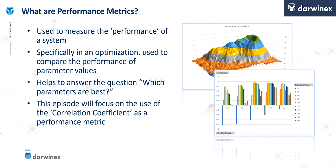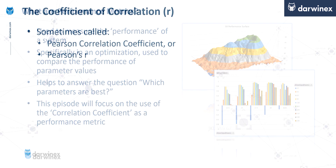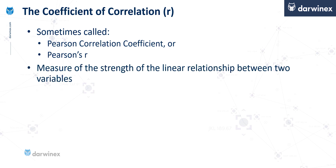So now let's start to focus our efforts on the correlation coefficient, and using that as a performance metric. Now the correlation coefficient also has a number of other names, so you might hear it termed the Pearson correlation coefficient, or simply Pearson's r-value. But what this metric does is measure the strength of the linear relationship between two variables.